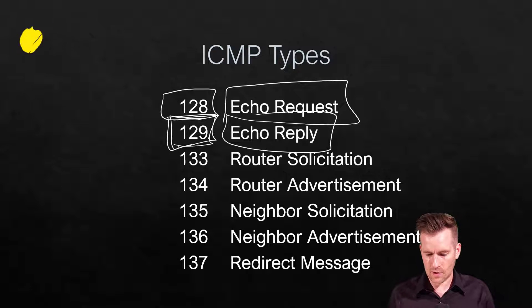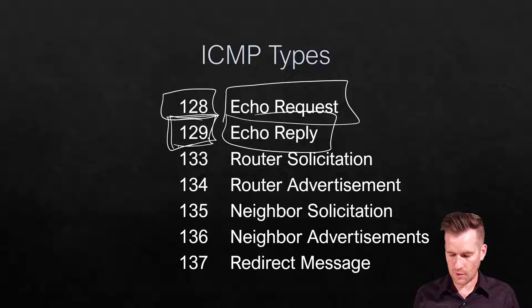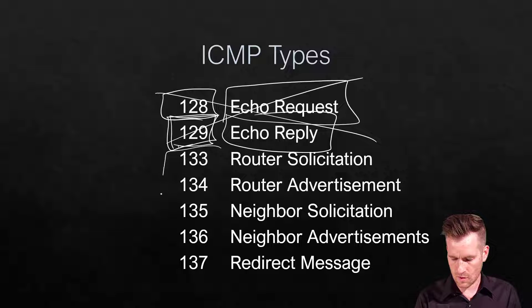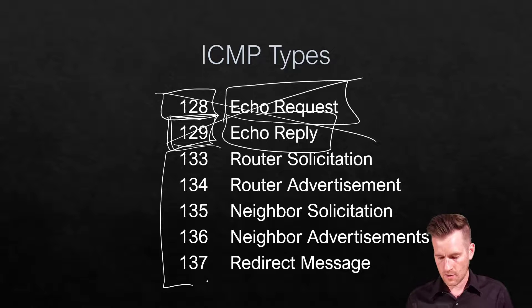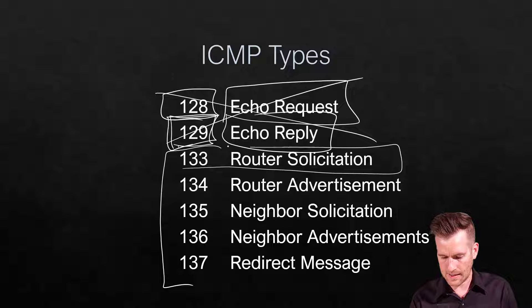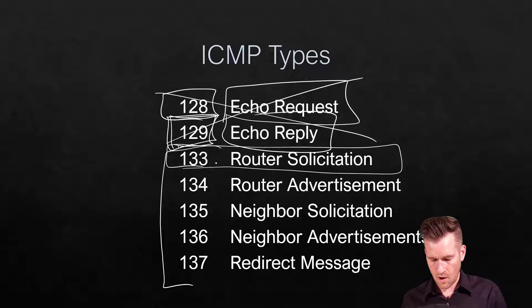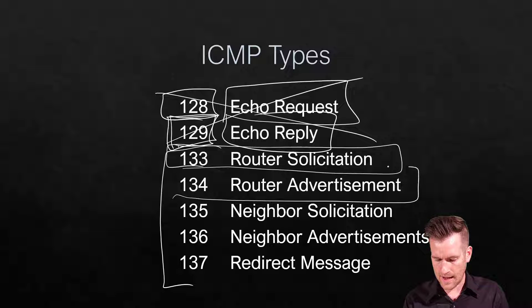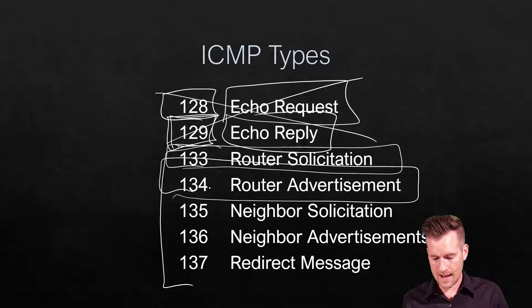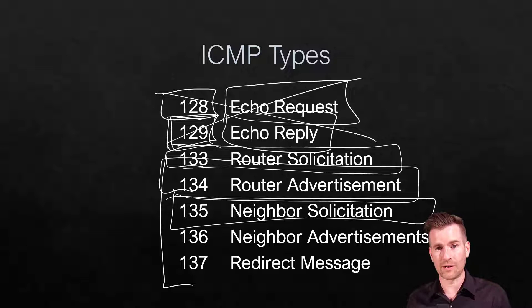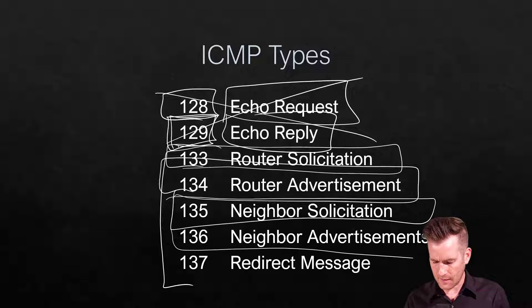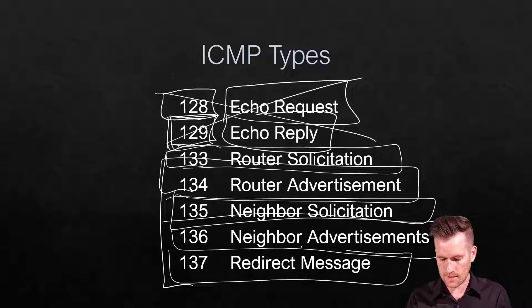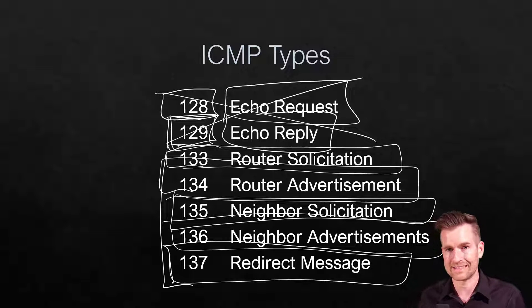So where does this come into Neighbor Discovery Protocol? NDP doesn't use those ping types, but it does use these others. Router solicitation is type 133. Router advertisement is type 134. Neighbor solicitation is type 135. Neighbor advertisement is type 136. And a redirect message is type 137.